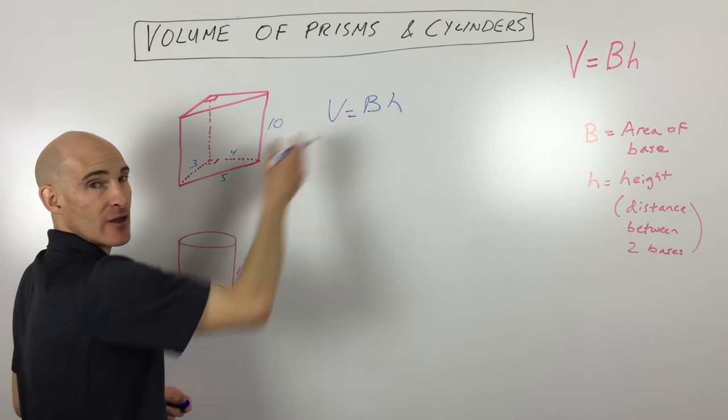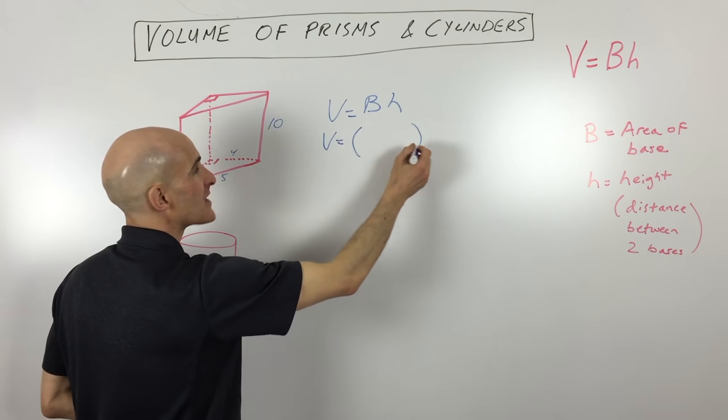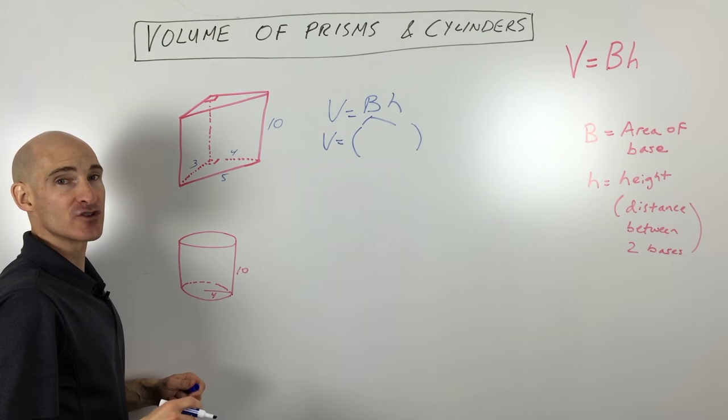I like to write down the formula, and you might want to do the same thing too, but then we can subdivide the formula. So the area of the base - that's a triangle. What's the formula for area of a triangle?